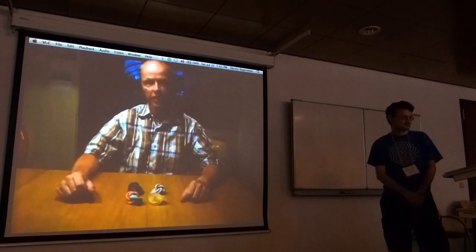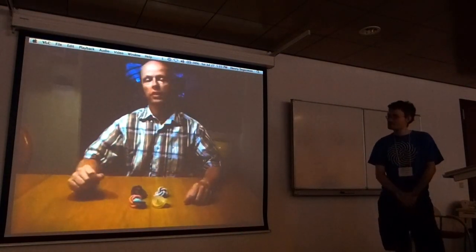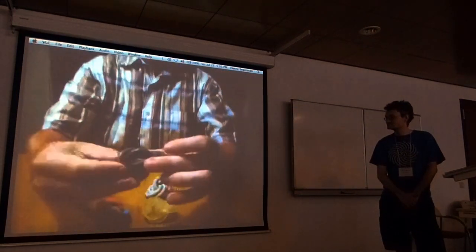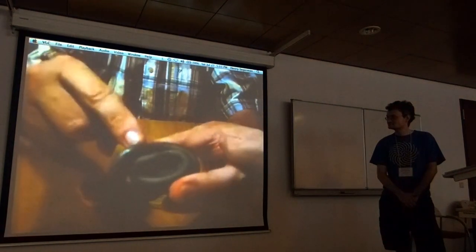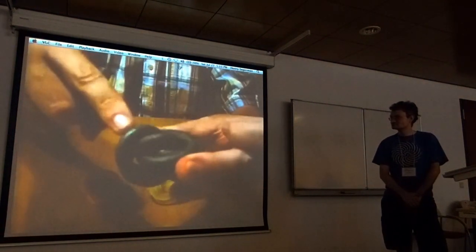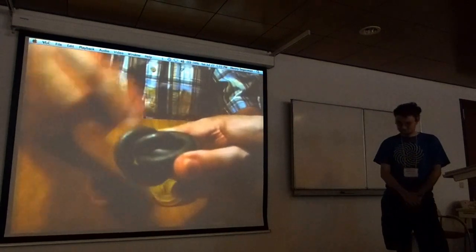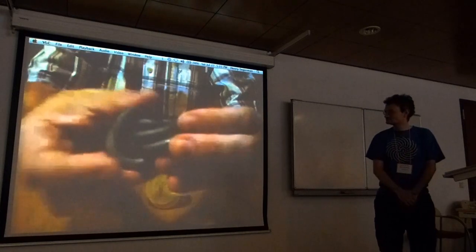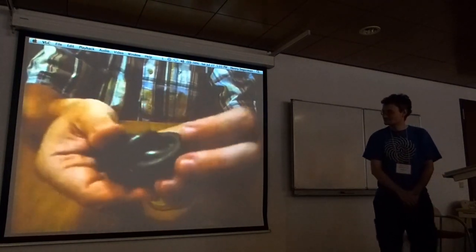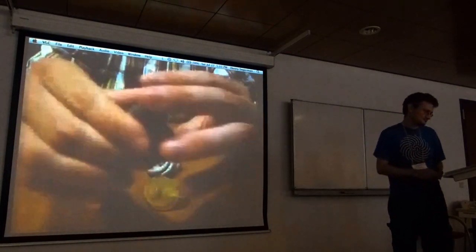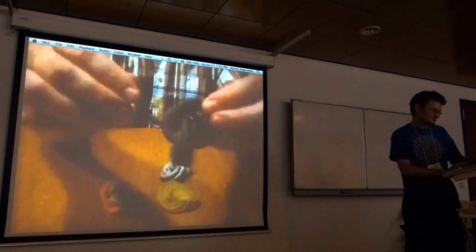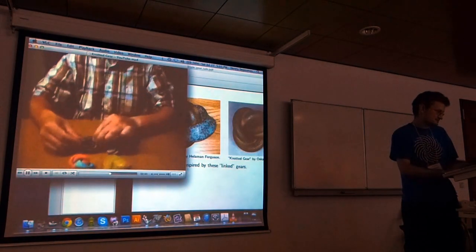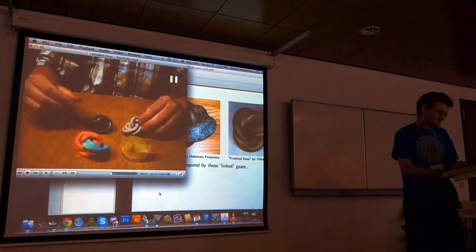Hi, I'm Oskar van Deventer, and this is the knotted gear. It's not a puzzle, but it's a puzzling object. These are two knots, a trefoil knot and the inverse, so a trefoil knot is a 2x3 knot, and the other one is a 3x2, and they gear into each other. This metal version is actually quite smooth and it gears really smoothly. Thank you, Oskar.